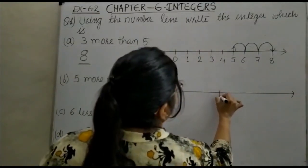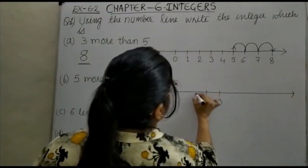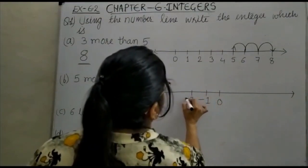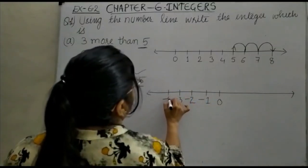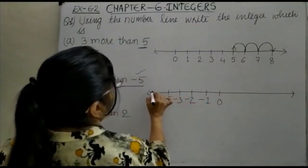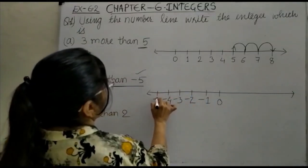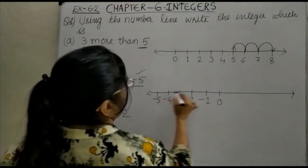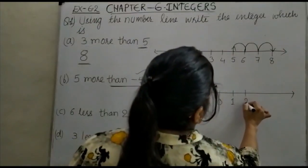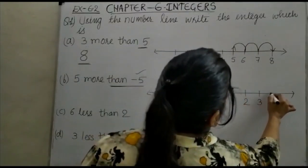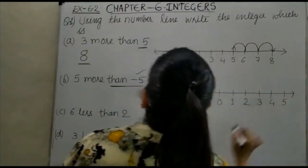You can see here: 0, minus 1, minus 2, minus 3, minus 4, minus 5, then 1, 2, 3, 4, and 5.